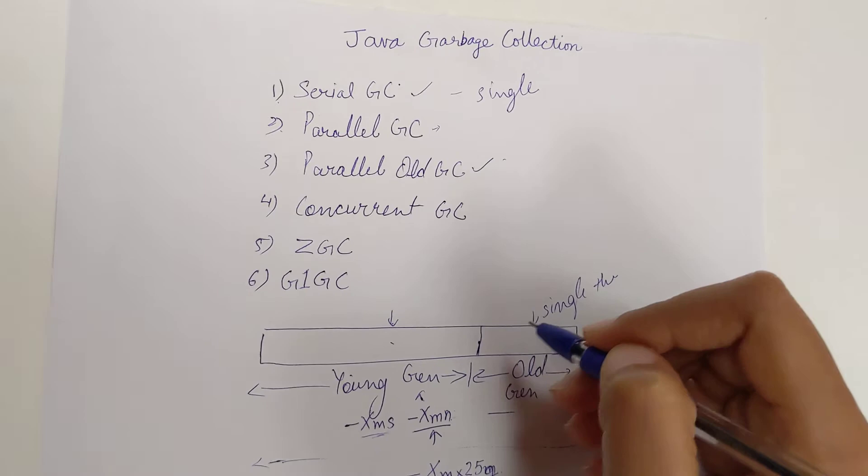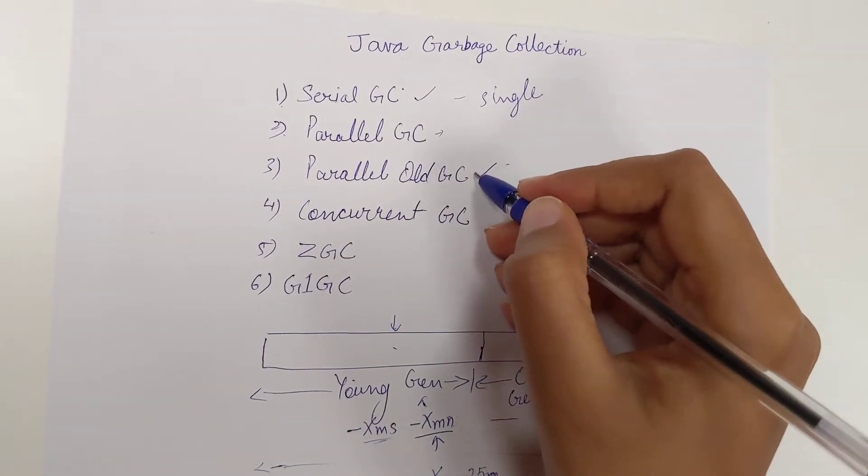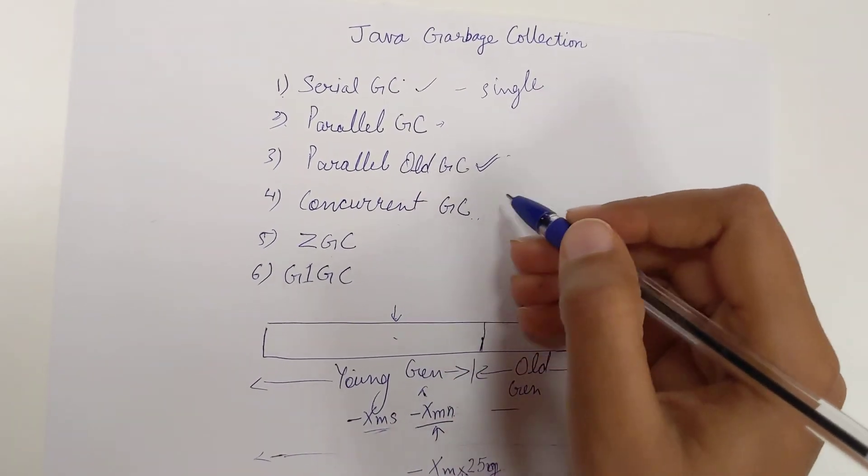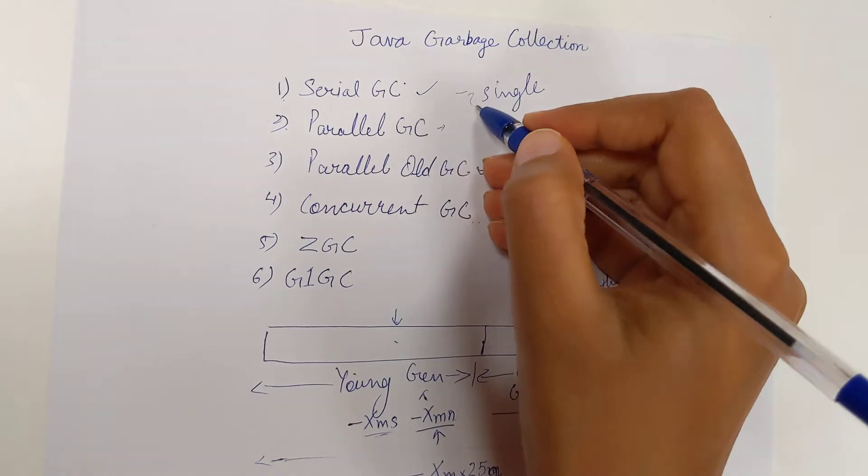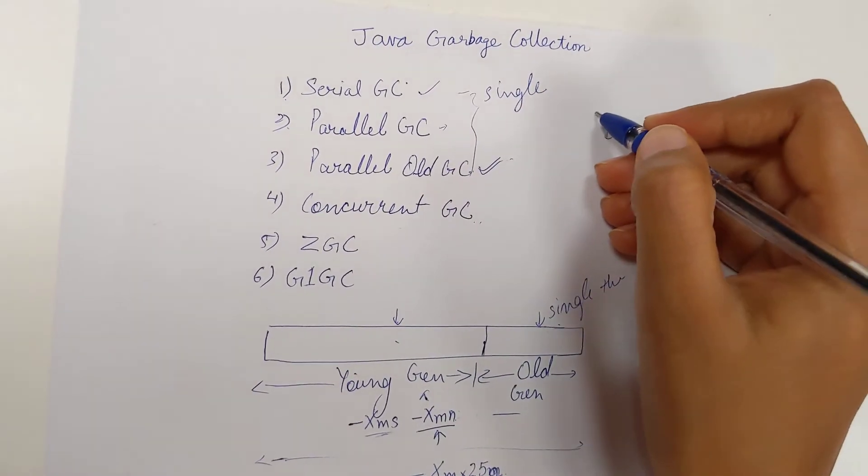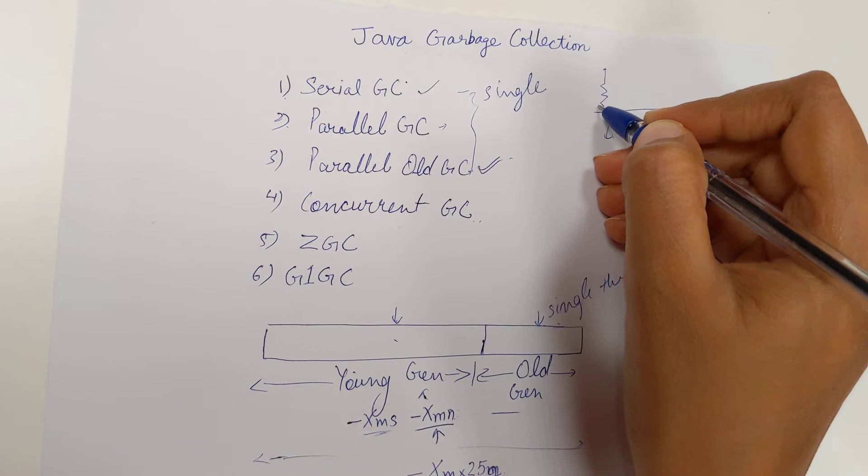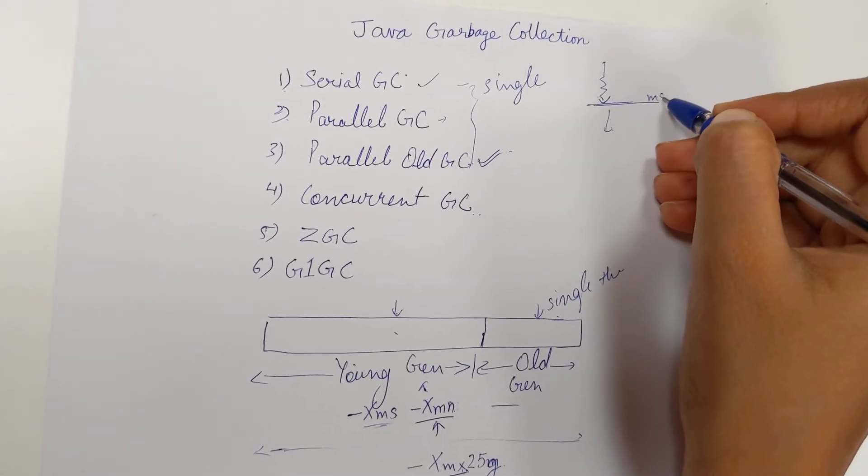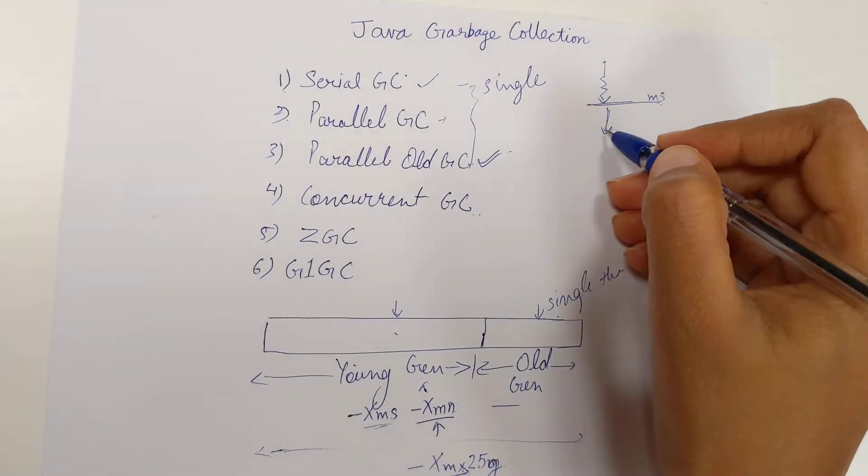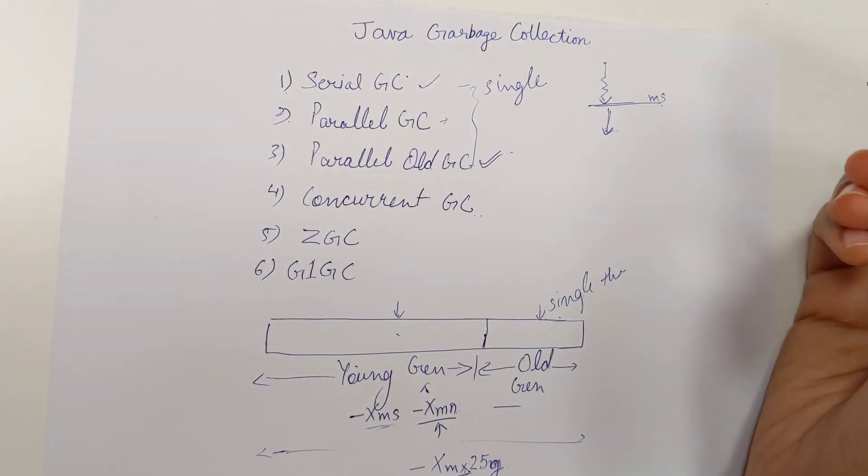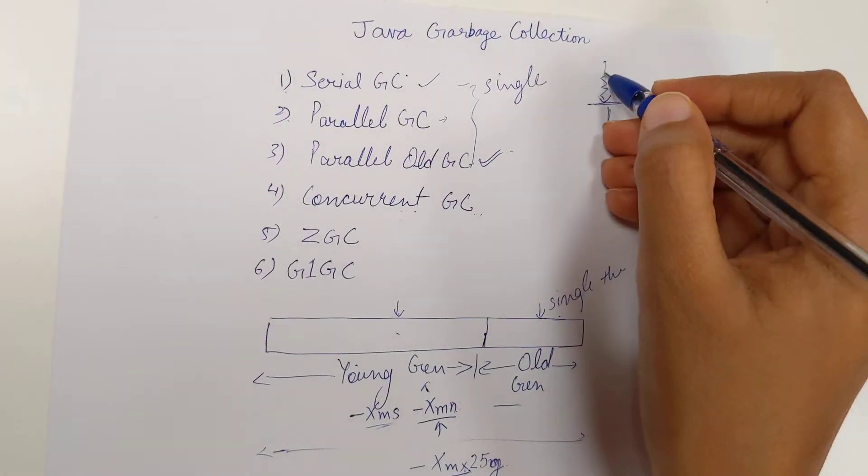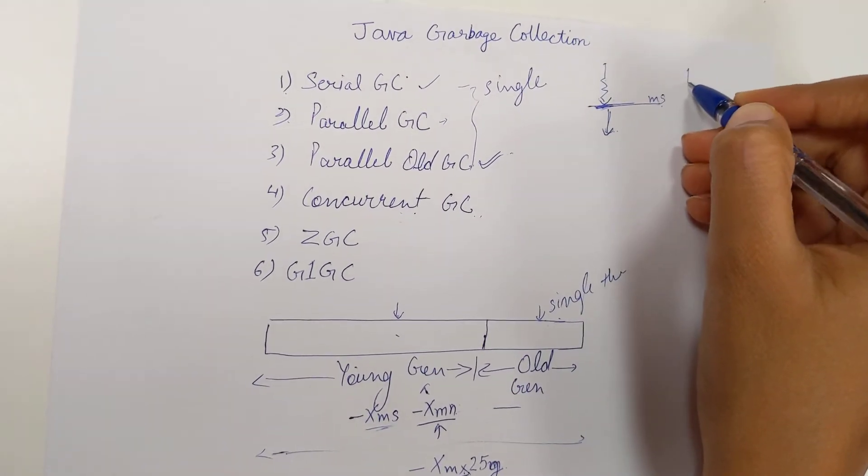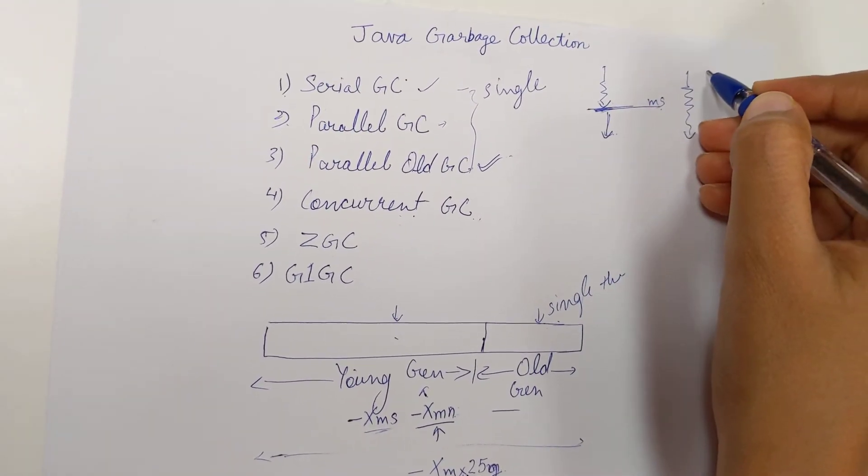These three GCs run when your application is running. When GC happens, your application pauses for a few milliseconds, then resumes and continues its job. In Concurrent GC, your application doesn't have to stop. Your application keeps continuously running, and in parallel, your garbage collection is also happening.